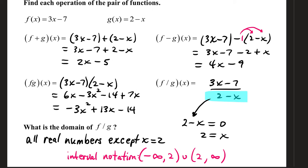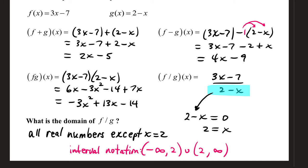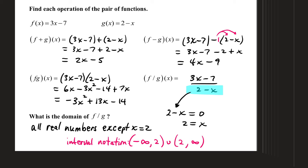For the domain part of this, you find out what creates a zero denominator. Well, 2 minus x is equal to 0 if x equals 2, because 2 minus 2 is 0. Your domain is all real numbers except for 2. In interval notation, that's all numbers leading up to 2 or all numbers after 2 on a number line.